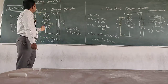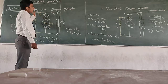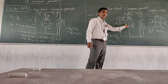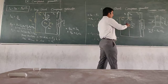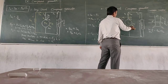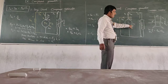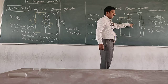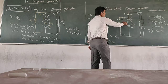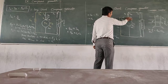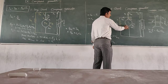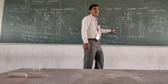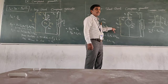Now, similar to long shunt, we have short shunt. If the shunt field winding is connected across the armature only, this is the armature with terminals A and AA, having resistance Ra and generated voltage Eg. If the shunt field winding is connected across the armature only, then the compound generator is called a short shunt.